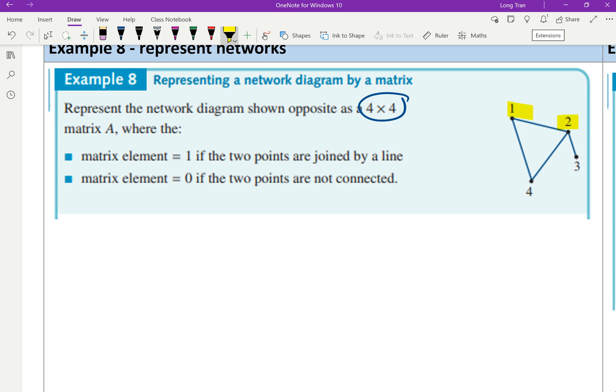You have one, two, three, four - there are four points in the network, so the number of points you have determines how you're going to make your matrices. Now in this matrix form it's a very simple idea. You're going to do a four by four, so you can think of it as one, two, three, four and then one, two, three, four that represents the dot points. They say matrix element equals one if two points are joined by a line. What they're trying to say is that if point number one is connected to say two, then you've got a one that tells you there's one connection there.